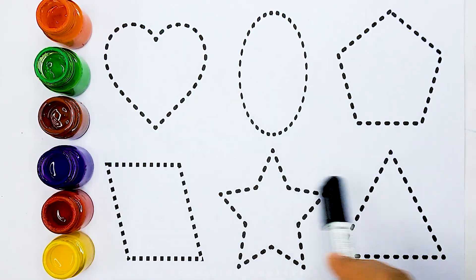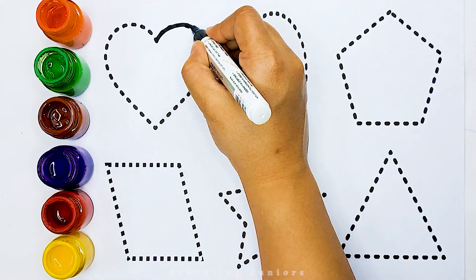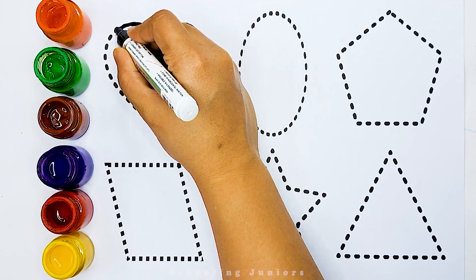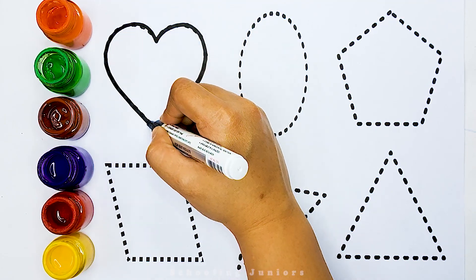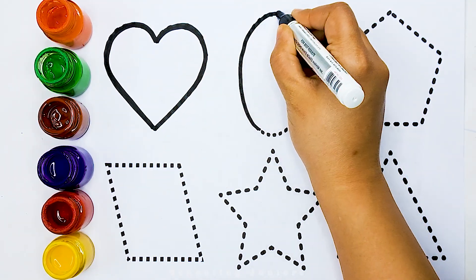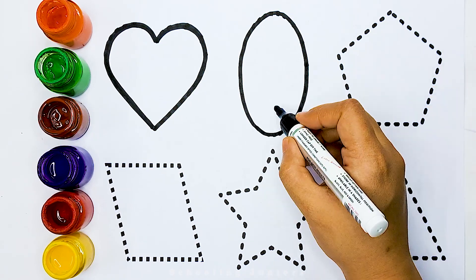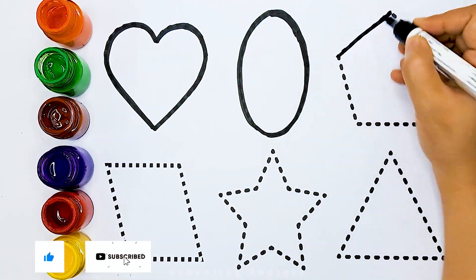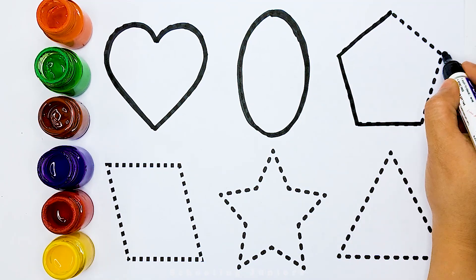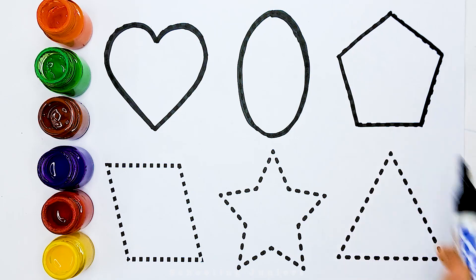Now, let's learn to draw some 2D shapes and color the shape. Heart, oval, pentagon.